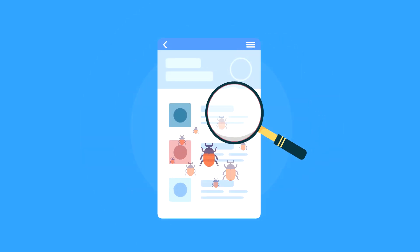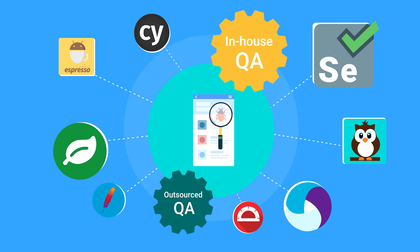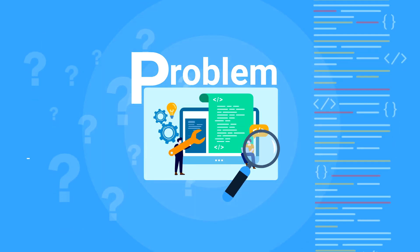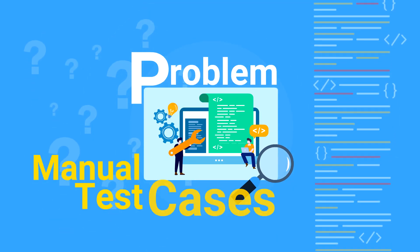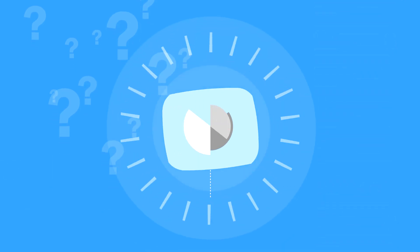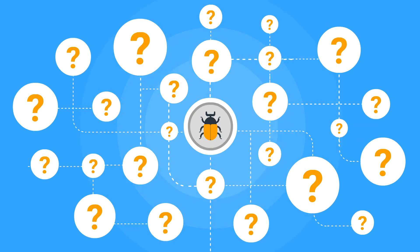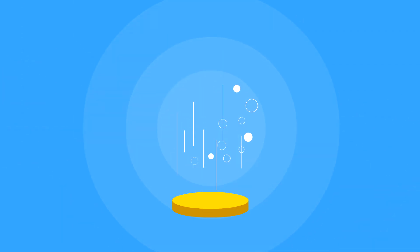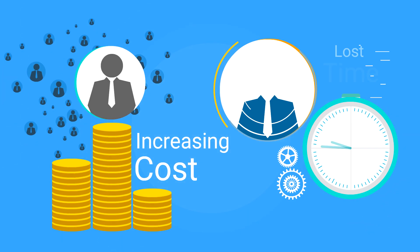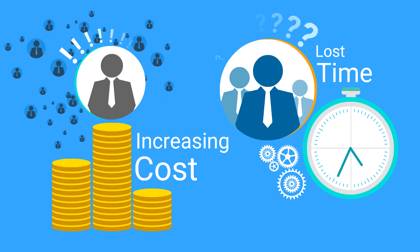Worried about bugs in your app? How do you test it? These are the available QA solutions. The problem is they are all based on manual test cases. So as your app grows complex, it becomes impossible to imagine and test for all failures. And then there's the cost of an ever-expanding QA team and the time lost in coordinating with developers.